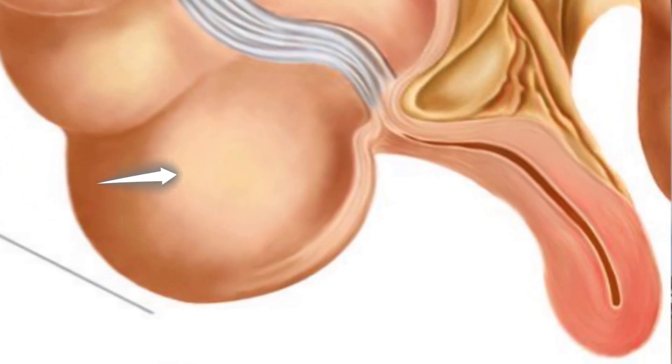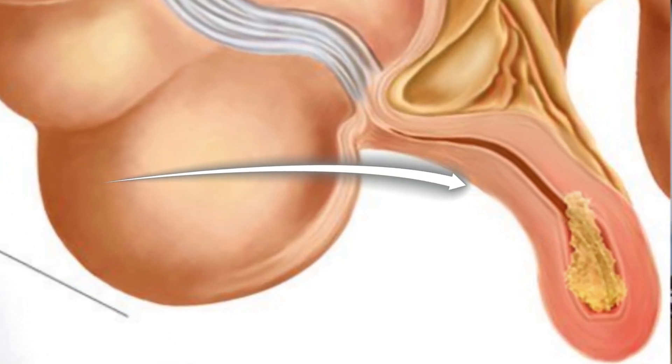In rare cases, tumors can grow inside the appendix and block its opening. Once the appendix is blocked, bacteria begin to multiply inside. This can lead to inflammation and infection, causing the appendix to become swollen, tender, and painful. If the infection is not treated, it spreads to the surrounding tissues.